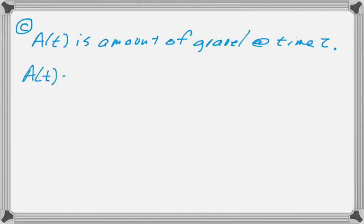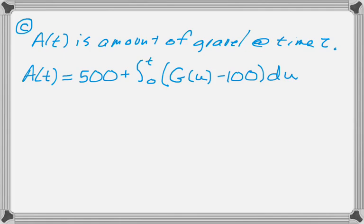So, that's going to be A of T is the amount you start with, which is 500, plus the integral from 0 to T of G of, I'm going to use U here, minus 100. And where that came from is G of T, which I've changed to G of U.